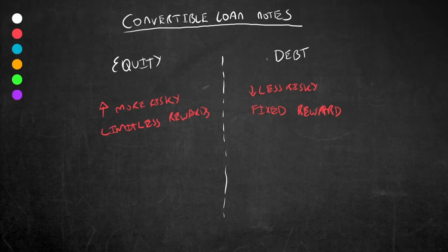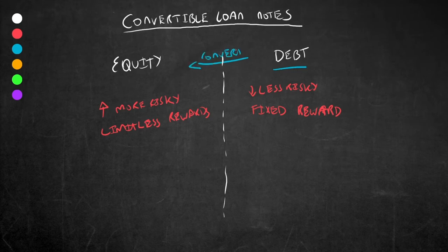A convertible loan note is essentially a mixture of debt and equity. It is essentially debt which can convert to equity at a later period of time.